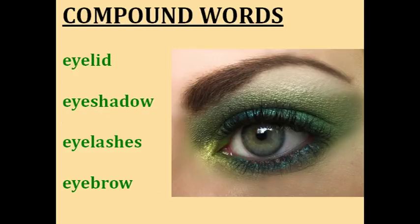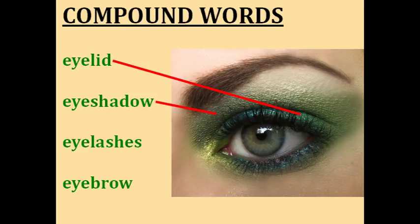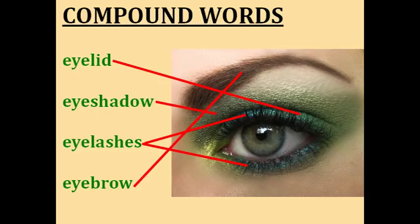Now I'm going to teach you four words related to your eyes. Your eyelid is the small fold of skin that covers your eyes when you close them. Women like to decorate their eyelids with a type of makeup called eye shadow. These tiny hairs on your eyelids — on the top and bottom — are called your eyelashes. And the line of hairs above your eye is your eyebrow. So four compound words with eye: eyelid, eye shadow, eyelash, and eyebrow.